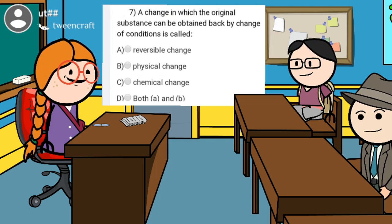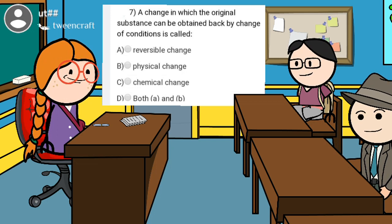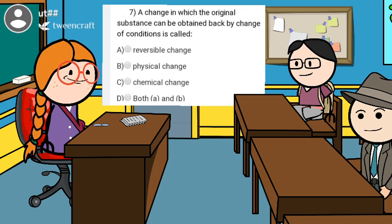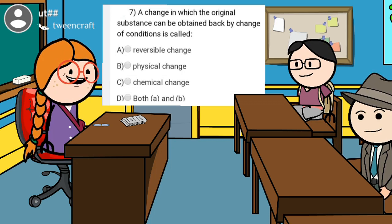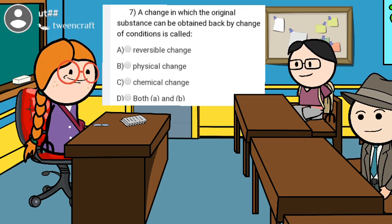Our seventh question: a change in which the original substance can be obtained back by change of condition is called — option A: reversible change; option B: physical change; option C: chemical change; option D: both A and B. The student answered chemical change, but that is wrong. The correct answer is option D — both A and B, meaning both reversible change and physical change.